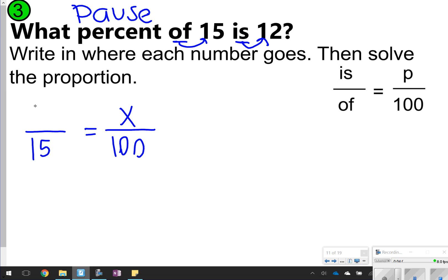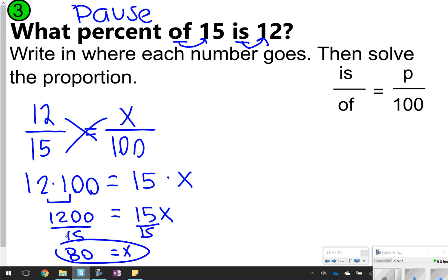And then it says, what percent of 15 is 12? 'Of', because 15 follows 'of'. That's going to be the 'of'. And 12 will be the 'is'. Okay, and then I'm going to cross multiply 12 times 100 and 15 times x. 12 times 100 is 1200, and 15 times x is 15x. And then all I have to do now is just divide 1200 by 15, and I get x is equal to 80. So that means 80% of 15 is 12.